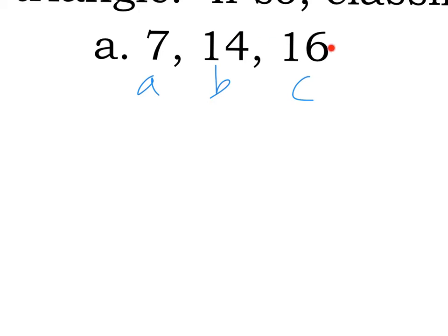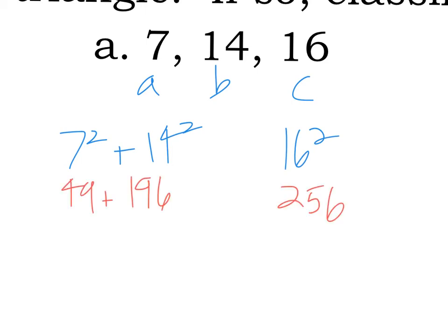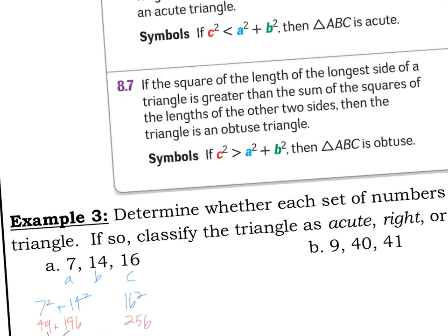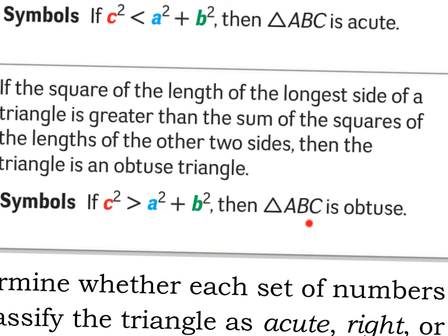In this first example, the three sides are 7, 14, and 16. The largest side, 16, is c; 7 and 14 are a and b. Compute 7 squared plus 14 squared: that's 49 plus 196 equals 245. Then compute 16 squared, which is 256. Since 245 is less than 256, c squared is greater than a squared plus b squared, so this is an obtuse triangle.